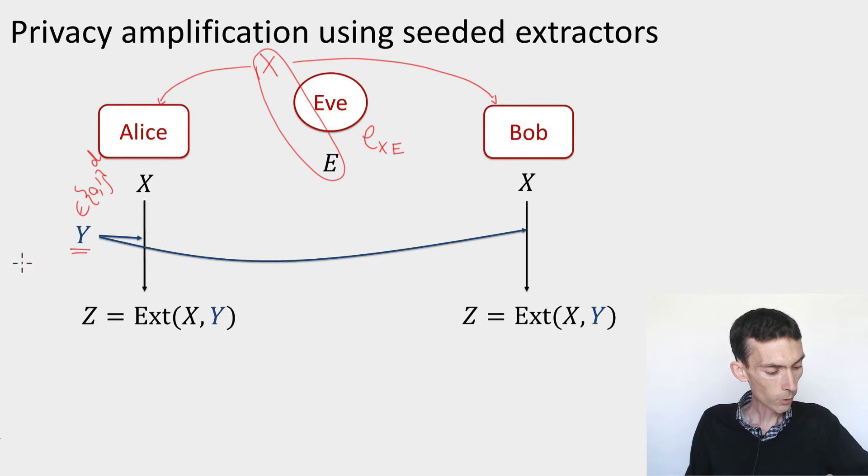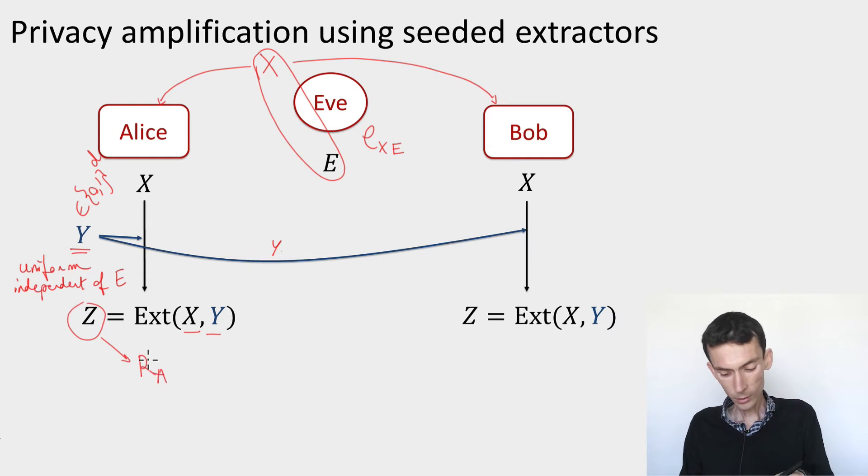Then Alice will communicate Y over the public channel to Bob. Both Alice and Bob have the string Y. They can compute the extractor by evaluating it on X and Y. The result is a string Z, which they're going to use as their output of the privacy amplification procedure. This is what we called r_A and r_B before.